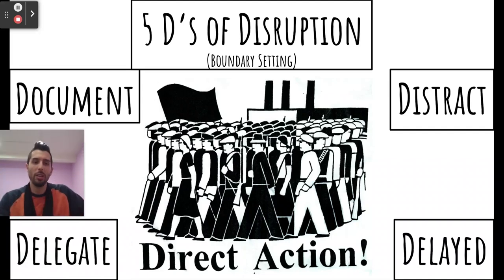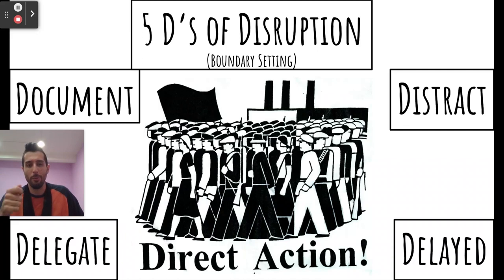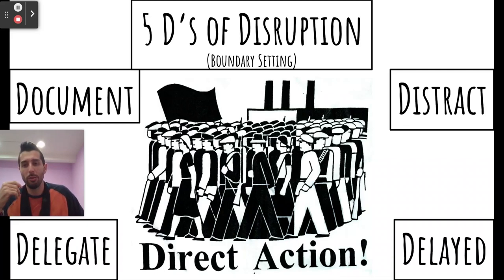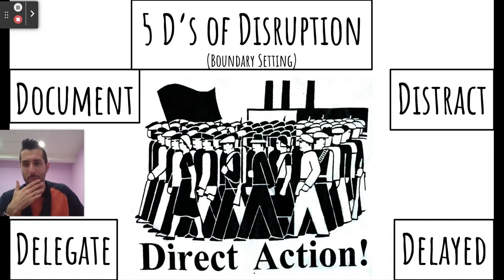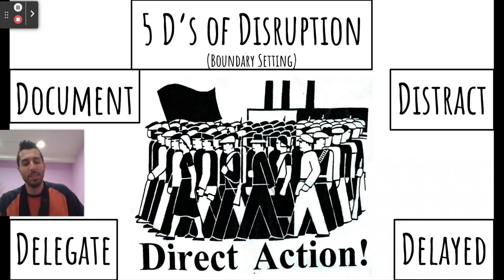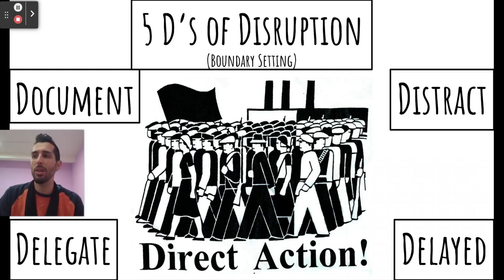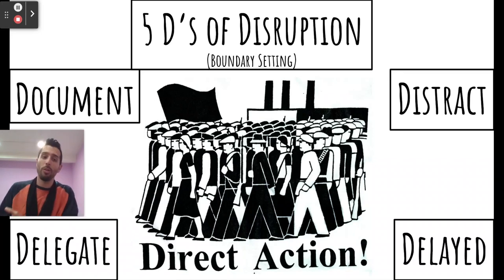Distract — in the street harassment model, this typically means asking the person doing the harassing for directions; in a school setting, it might be asking the bully what the homework was. That just distracts the person instigating the harm from continuing it. Delegate — maybe we're not comfortable stepping in ourselves, but we know someone who would be, so we call upon someone else. Delay — maybe we didn't feel comfortable stepping in right in the moment, but afterward we can check in with the person who was bullied: 'I was really scared to step in, but I saw what happened — are you okay?'